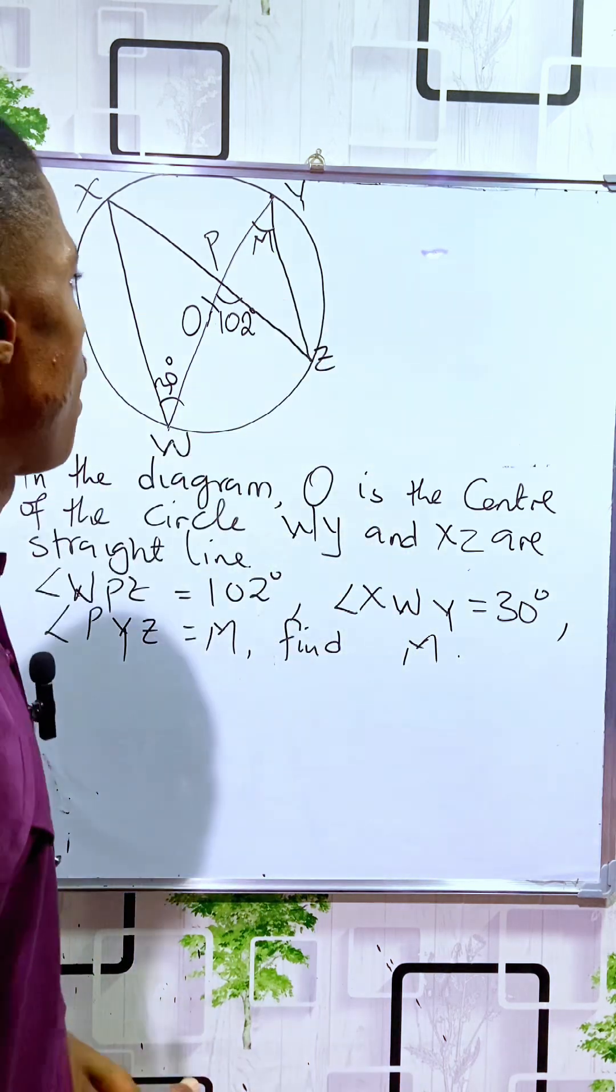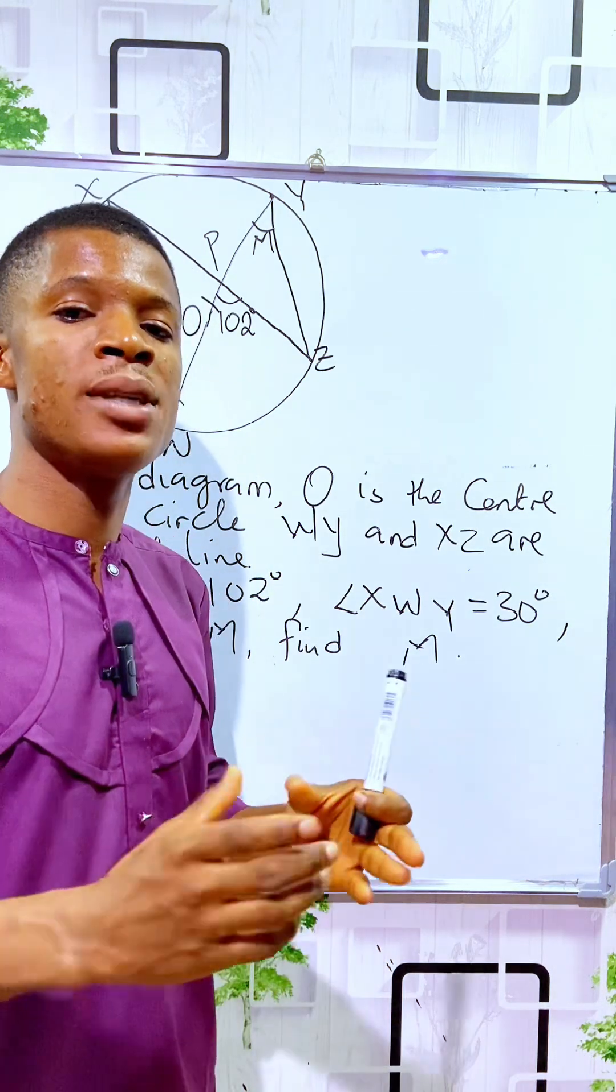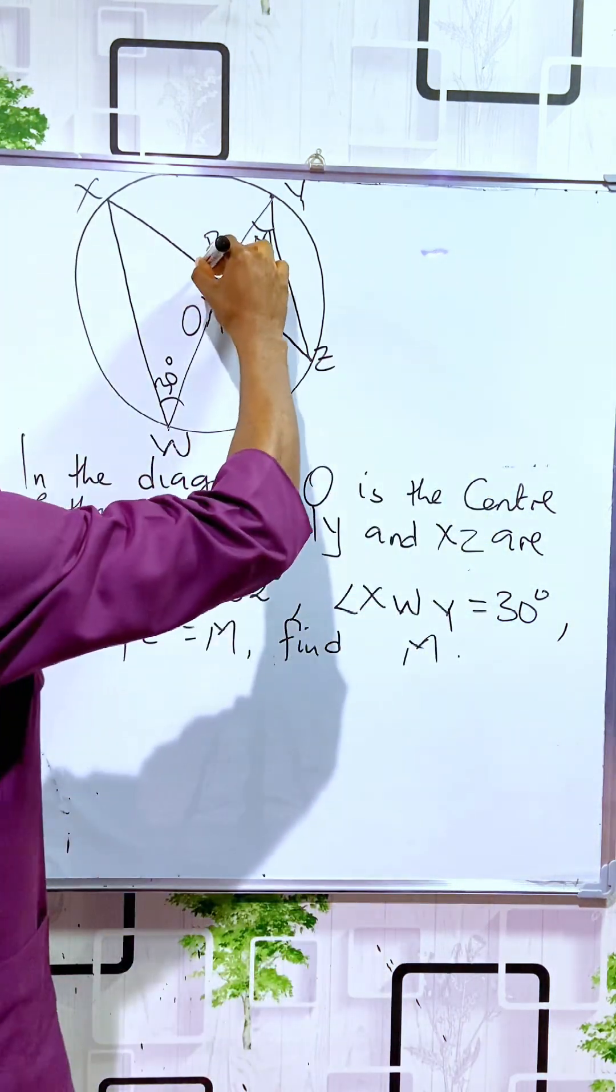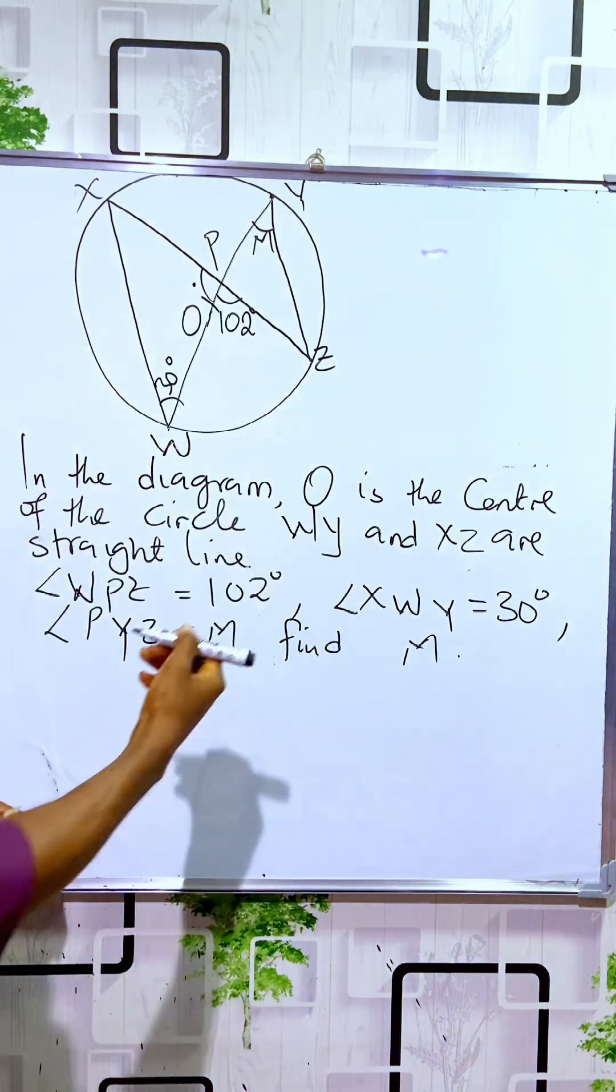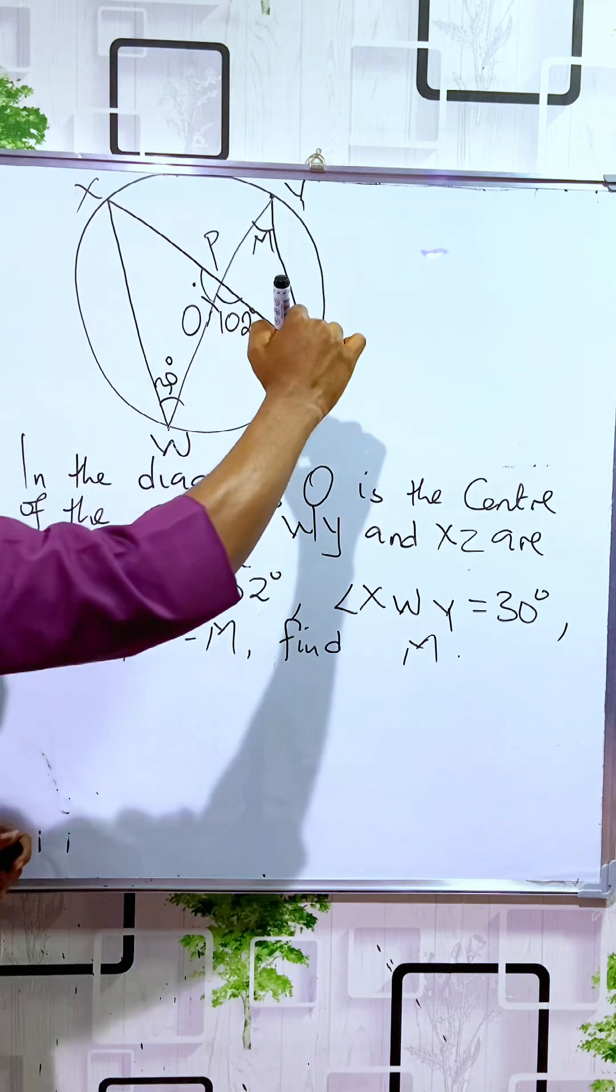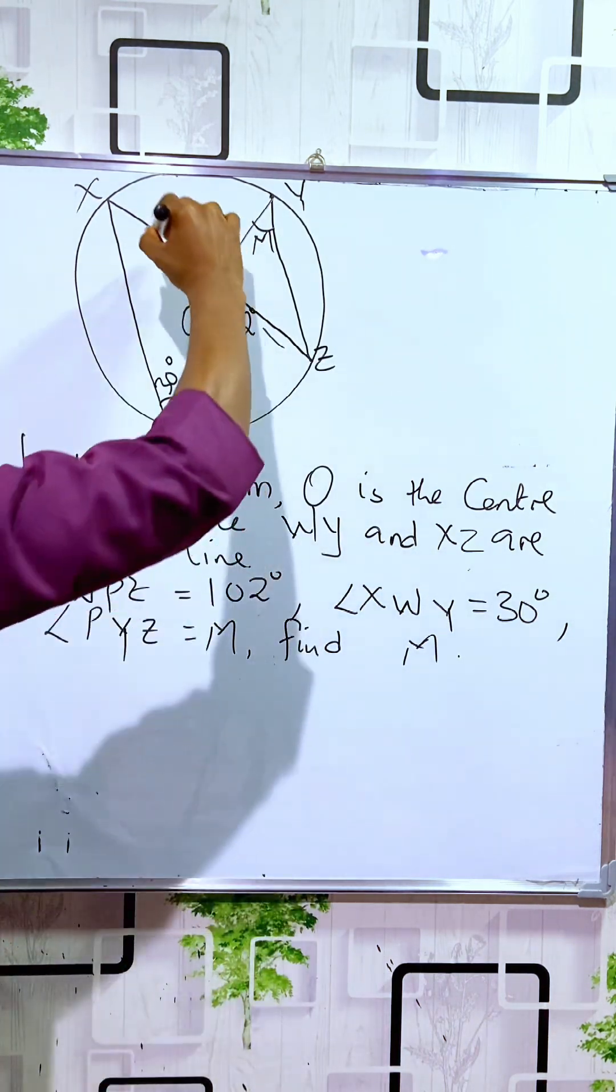To find the value of M, we will observe a few procedures. First, let's try to find this angle here. This is like a triangle and another triangle joined together.